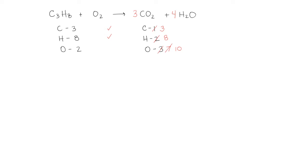And we've got 2 oxygen on the left and 10 on the right. So let's put a 5 in front of the O2 on the left, which now gives me 10. And our oxygen is balanced. So our balanced chemical equation is 1 mole of C3H8 reacts with 5 moles of O2 to produce 3 moles of CO2 and 4 moles of H2O.